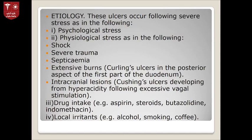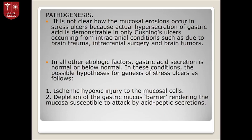Extensive burns give rise to what is called Curling's ulcer, typically in the posterior aspect of the first part of the duodenum. Intracranial lesions that increase intracranial pressure produce Cushing's ulcers, due to hypersecretion of acid following excessive vagal stimulation — increased intracranial pressure increases vagal stimulation of the vagus nerve (cranial nerve X), leading to hyperacidity. Drug intake such as aspirin, steroids, indomethacin, alcohol, smoking, and caffeine are also causes.